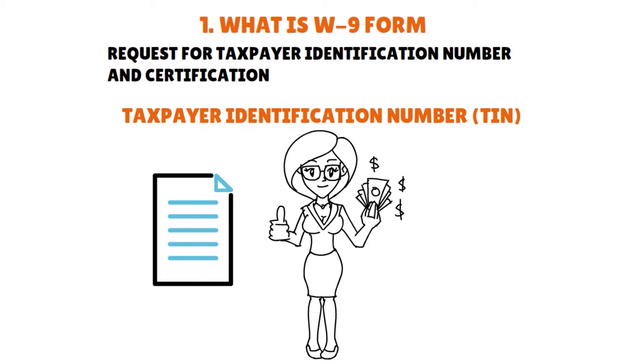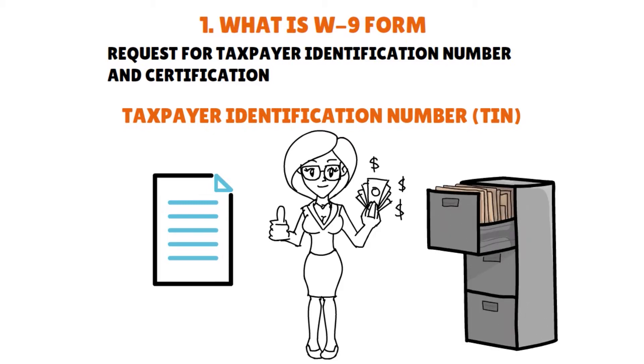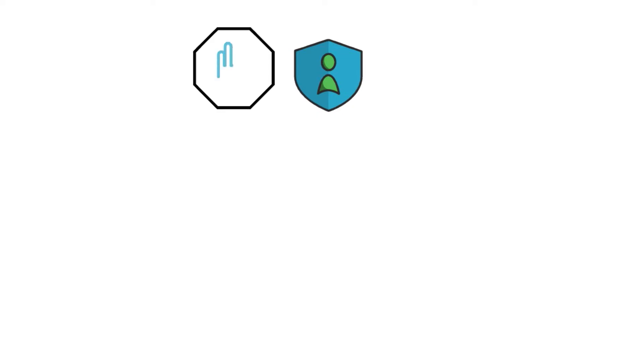Employers don't make that withholding for contractors. Form W-9 records the tax ID numbers for workers who are not employees, and it records the statement of the person completing the form swearing that the taxpayer identification number is correct. Backup withholding is required withholding by employers for individuals who have not included a valid taxpayer identification number on the Form W-9, implemented at a rate of 24% as of 2020 and 2021.